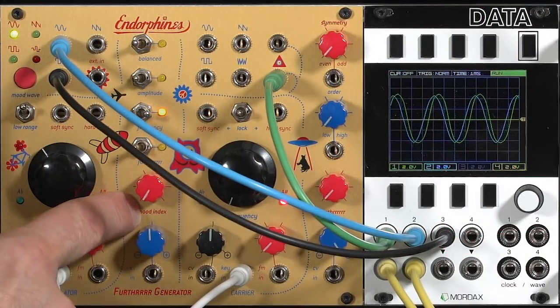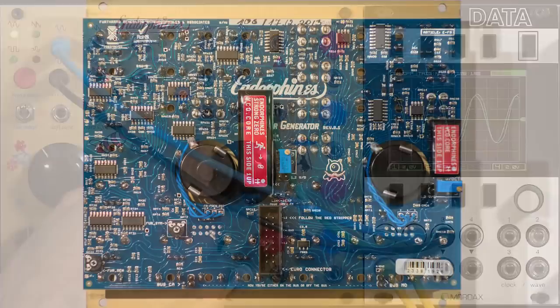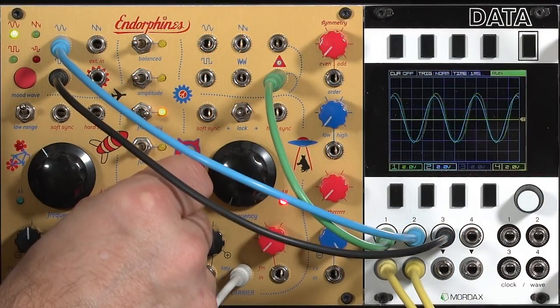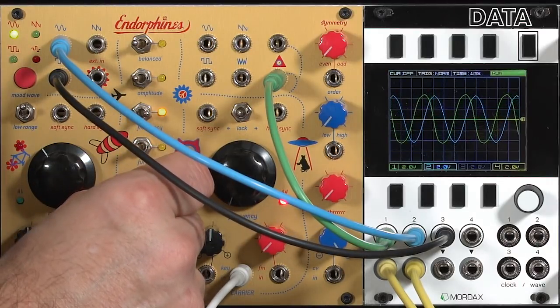Let's start increasing the mood index of the sine wave modulating the final output here. I have the jumper set in the back right now for exponential FM. As I increase the mood index, we don't hear a lot for the first half of the control, but the second half it really starts to kick in.